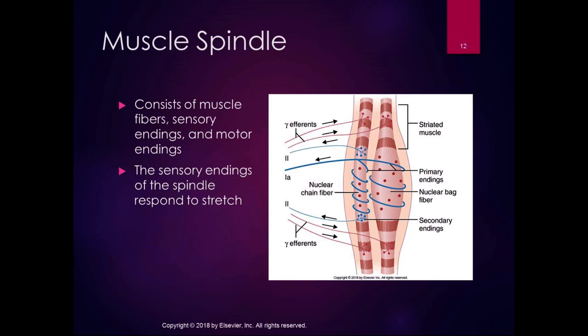The sensory endings of the spindle respond to stretch. We have two pieces of information in the muscle fiber regarding stretch: the actual length of the muscle, and the rate of change of length of the muscle. We have two different fibers, the 1A's and the 2's, that are telling us those different things. The 1A tells us the length of the muscle, and the type 2 tells us the rate of change of length.